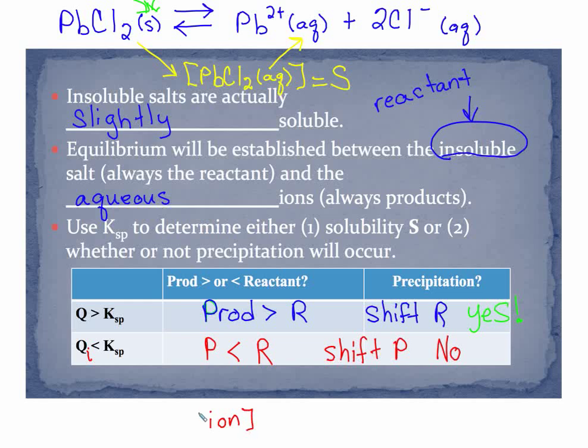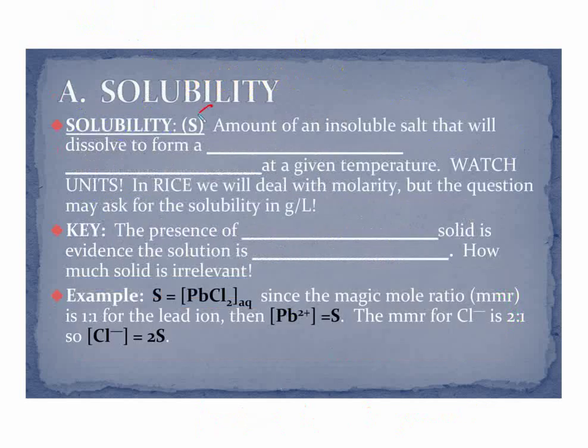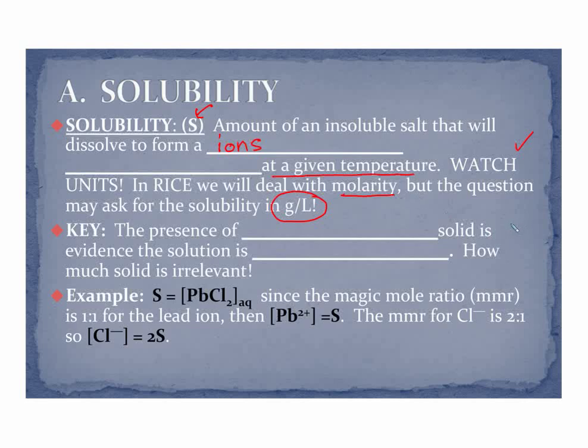So let's go on and see a few more. So we call solubility S—it's the amount of salt that will dissolve to form aqueous ions at a given temperature. It's good enough. Now watch your units: every once in a while you will be asked for grams per liter. We're going to be dealing primarily with our problems with molarity. You know how to get moles to mass using molar mass, so I'm not going to demonstrate that.